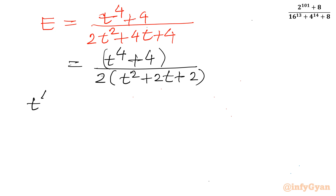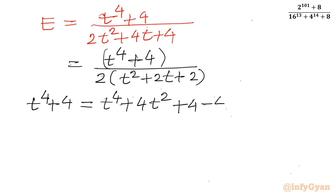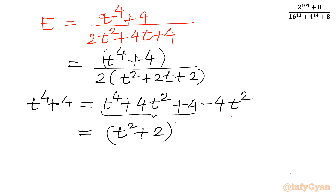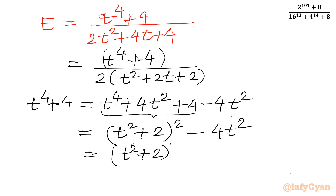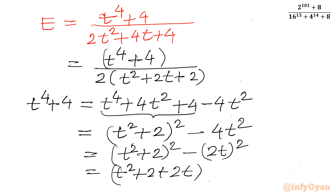For t power 4 plus 4, I add and subtract 4t squared: this gives (t squared plus 2) squared minus (2t) squared. Applying the difference of squares identity a squared minus b squared equals (a + b)(a − b), the numerator becomes (t squared plus 2t plus 2) times (t squared minus 2t plus 2).